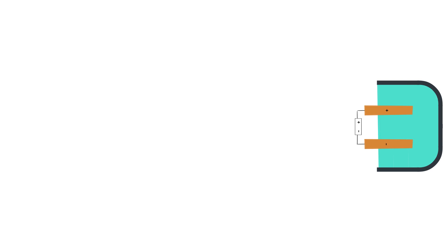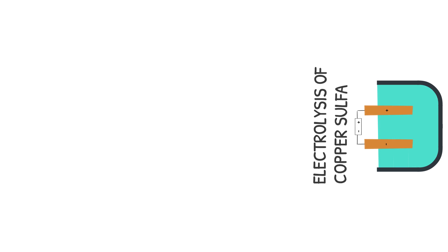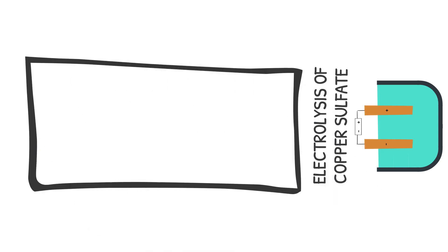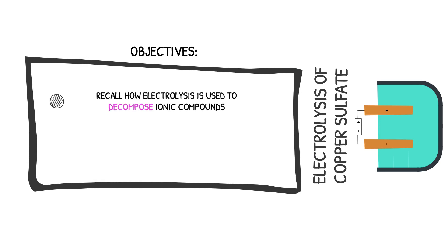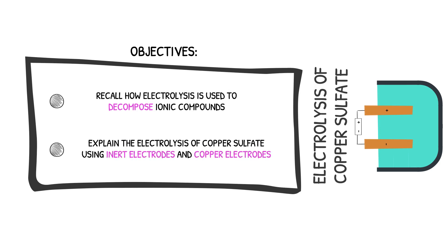Hey guys, welcome back to the laboratory. In this video we are looking at the electrolysis of copper sulphate. By the end of this video you should be able to recall how electrolysis is used to decompose ionic compounds and explain the electrolysis of copper sulphate using inert electrodes and copper electrodes. So let's go.